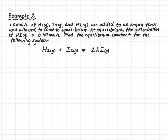In our next example, 1.0 moles per liter of hydrogen, iodine, and hydrogen iodide gas are added to an empty flask and allowed to come to equilibrium. At equilibrium, the concentration of HI is 0.40 moles per liter. Find the equilibrium constant for the following system: H2 + I2 ⇌ 2HI.